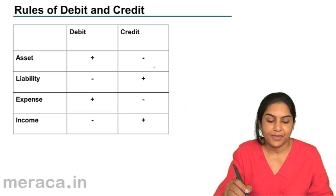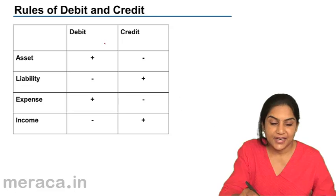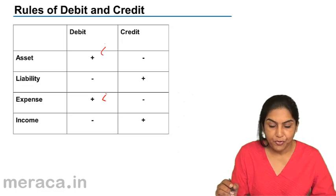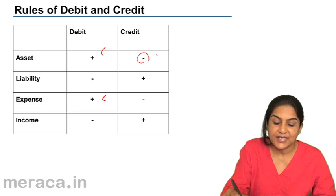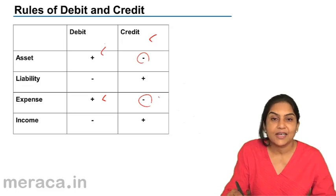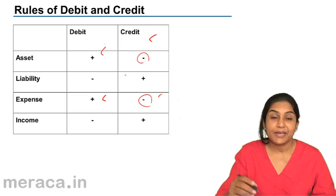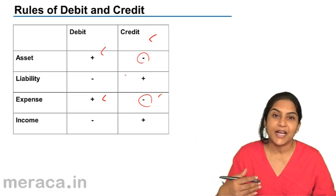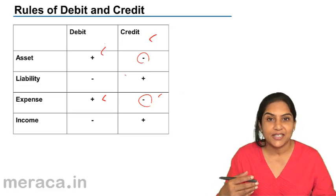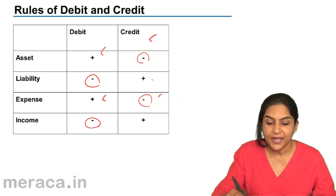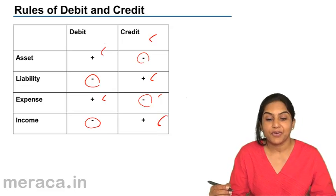Expanding the same: increase in assets are debits, increase in expenses are also debits, therefore decrease in expenses is a credit. In the case of liability and income it reverses: when liability comes down it is a debit, when income comes down it is a debit. But when liability goes up we credit, and increase in income we also credit.